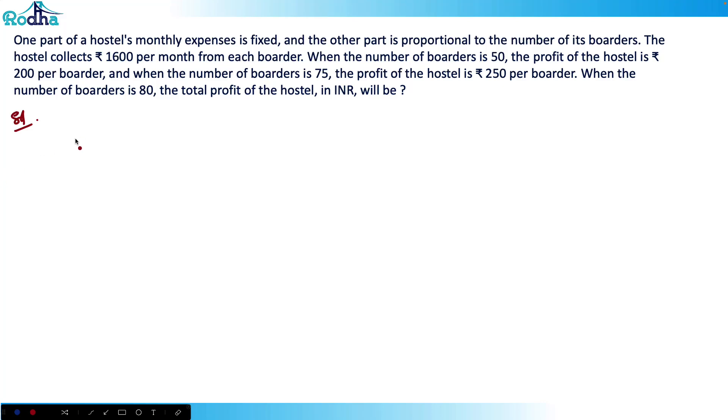Hi guys, let's look at the next question from CAT 2021 slot 3. One part of a hostel's monthly expenses is fixed and the other part is proportional to the number of its boarders. The hostel collects rupees 1600 per month from each boarder. When the number of boarders is 50, the profit of the hostel is rupees 200 per boarder. When the number of boarders is 75, the profit is rupees 250 per boarder.